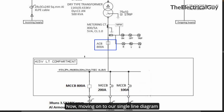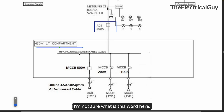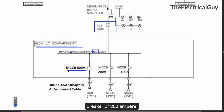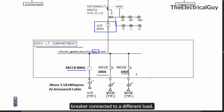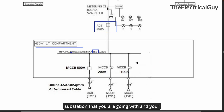Looking at the single line diagram, the ACB feeds a 415 volt low voltage compartment with a busbar — 415V, 3-phase, 800A, 50 Hz, 21 kilo ampere for one second. From this busbar, different taps are taken: an MCCB of 800 ampere connected to one load, a 200 ampere circuit breaker to a different load, and a 100 ampere circuit breaker to another load. Multiple output variants are possible — perhaps 4 or 5 outputs — depending on the compact substation and the application. Cable details are also provided on the diagram.